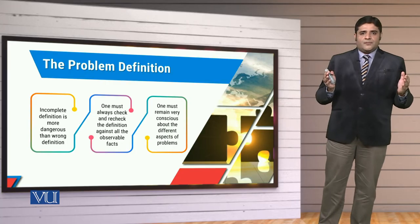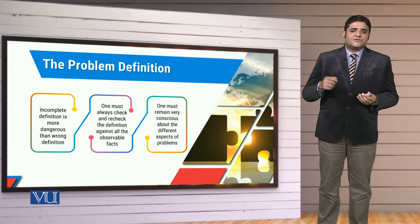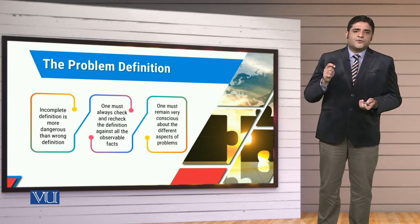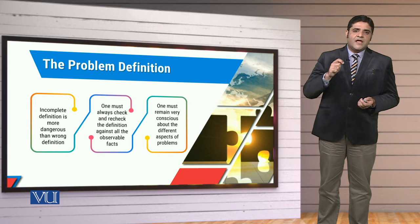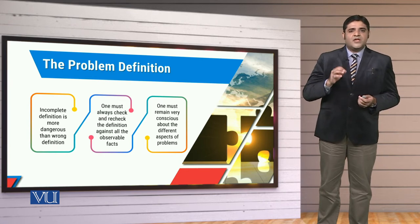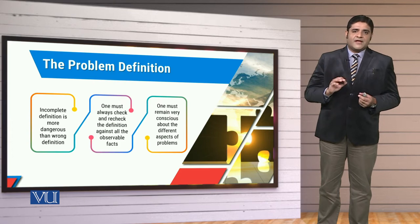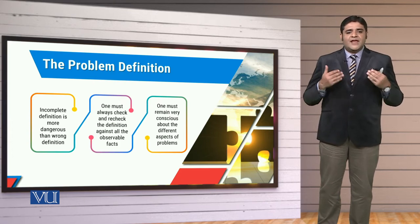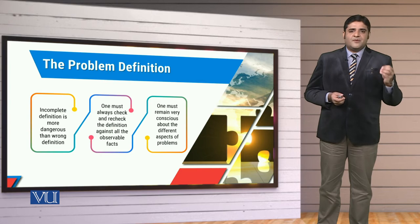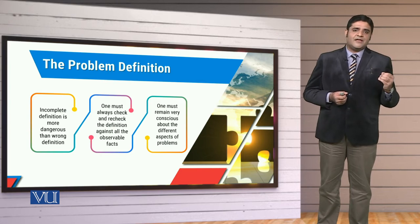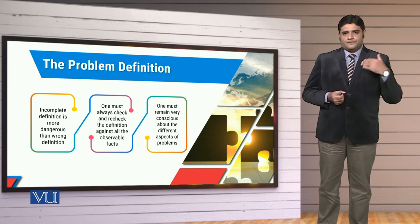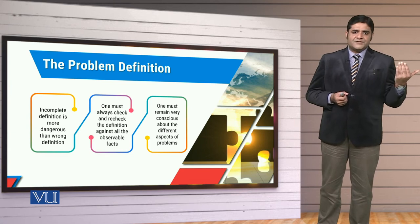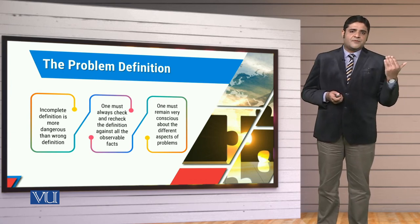Another important thing related to the problem is that one must always check and recheck that the problem's elaboration, definition, and statement में कहीं पर कोई ambiguity और कोई उलझाव ना हो। Because उस problem को अगर हम properly elaborate नहीं कर पाएंगे, हम observable facts को उसमें add up नहीं कर पाएंगे, तो obviously unforeseen के बारे में फैसला करना आपके लिए difficult होगा।